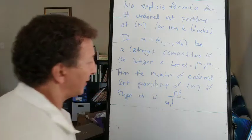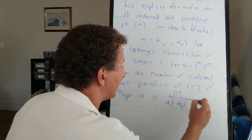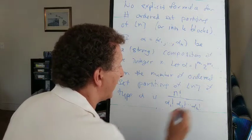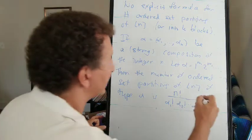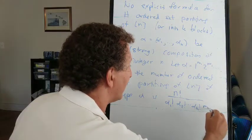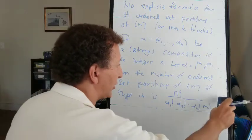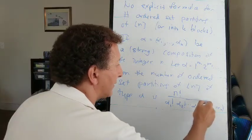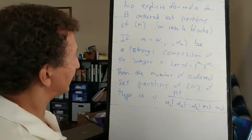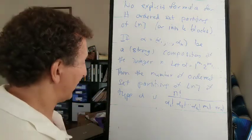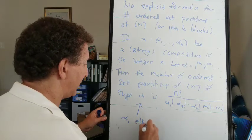But then if we have two blocks of the same size, or three blocks of the same size, we can permute those blocks amongst themselves. So we have to divide also by m1 factorial through, I guess the largest block size we can have is n. It could be a single block of size n. So we divide by all those factorials and we do have a nice formula for the number of ordered set partitions of n of type alpha. And this means alpha i elements in block i.